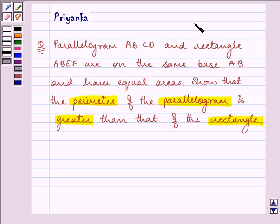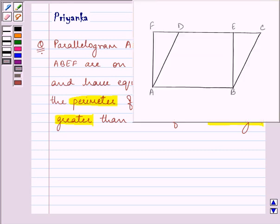In order to prove the given question, we need to draw a diagram to model this situation. Let us have a diagram. Now, this is the diagram that will be helping us in the solution. Here, ABCD is a parallelogram and ABEF is a rectangle on the same base AB. Let us start with our solution.